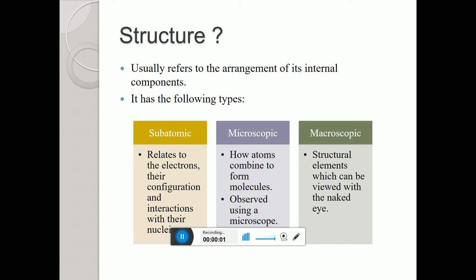In the last lecture, I gave an introduction to this subject called material science and engineering. I told you that material science consists of two components: structure and properties. Materials engineering contains two components: processing and performance. We will see broadly what these four components are.